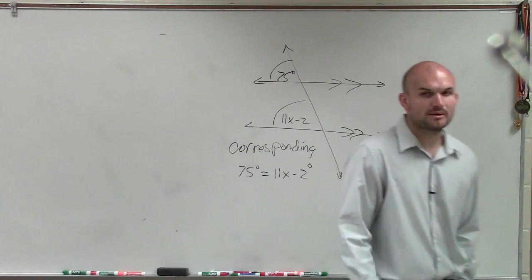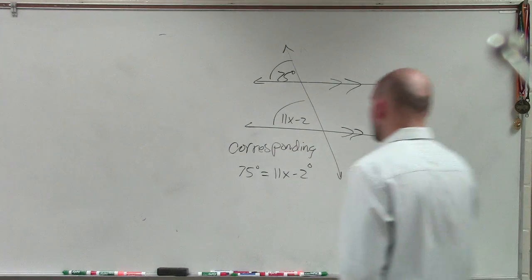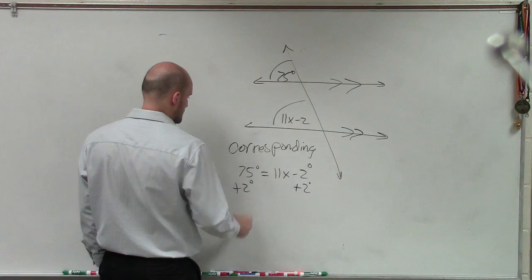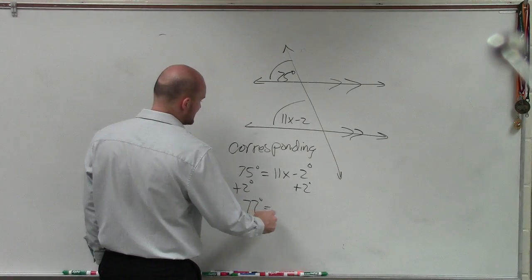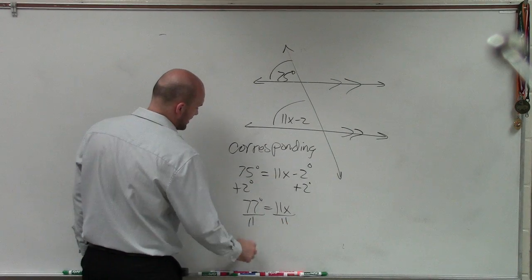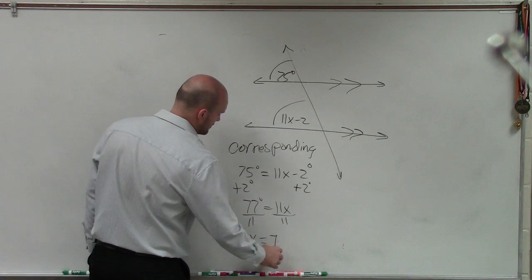So ladies and gentlemen, now what we're going to do is solve this. I will add 2 degrees. So therefore, it's 77 degrees equals 11x. Divide by 11, and x equals 7.